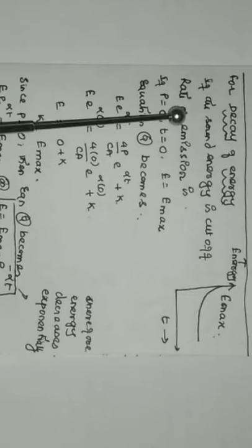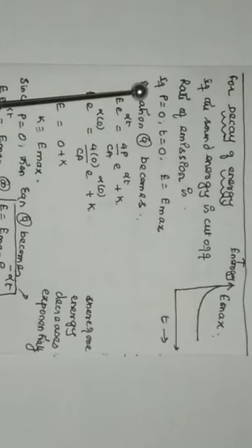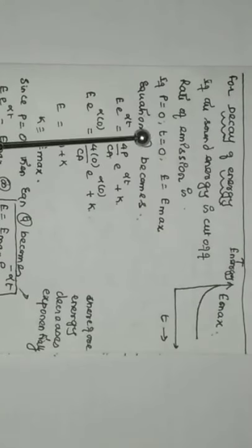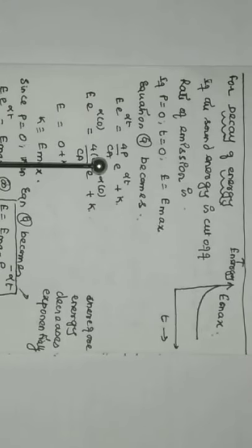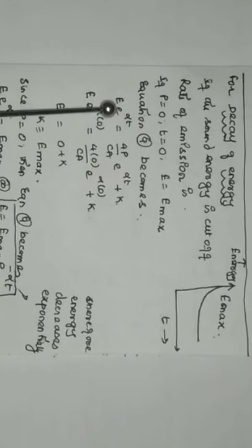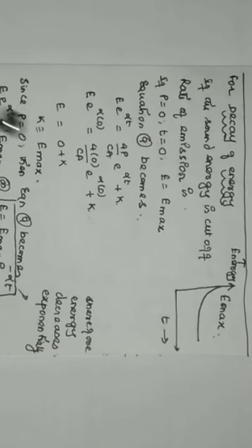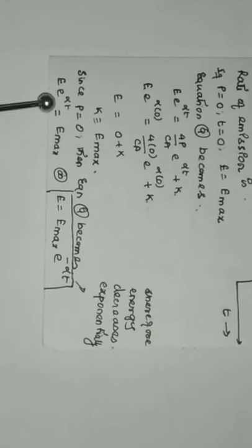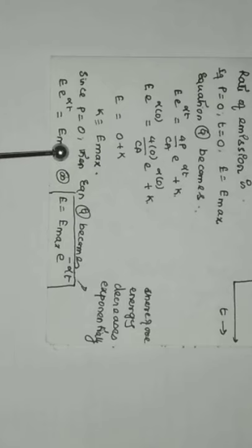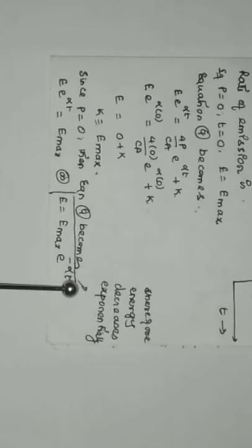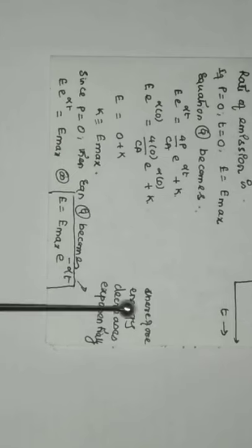For the decay of sound energy, when the sound source is cut off P = 0 and at t = 0, e = e_max. Substituting in equation 9 gives k = e_max. Therefore e·e^(αt) = e_max, and dividing both sides by e^(αt) gives e = e_max·e^(−αt), which shows that the energy decreases exponentially.